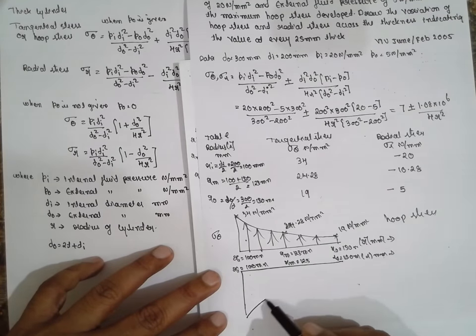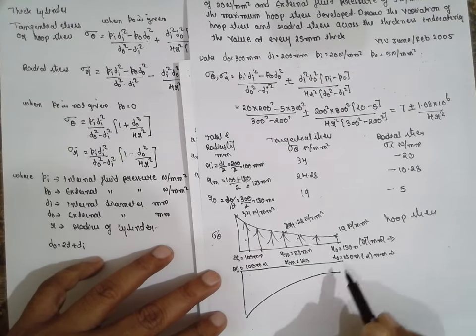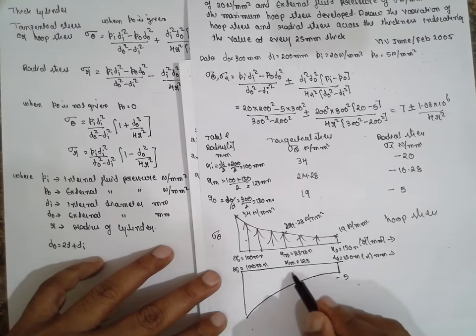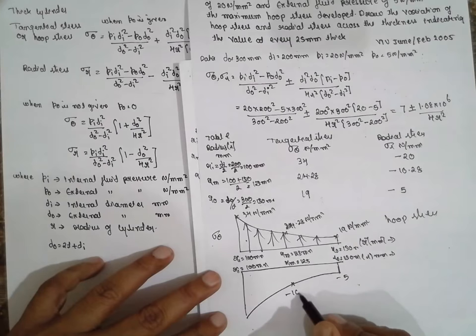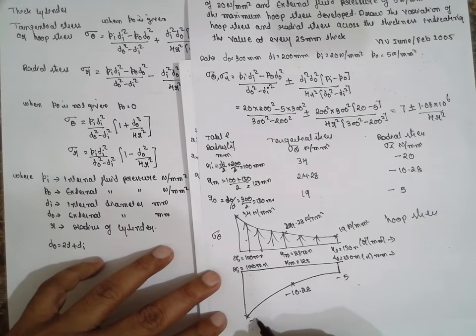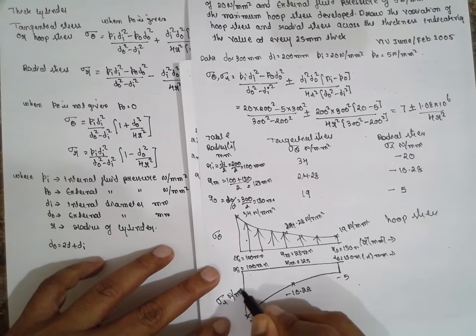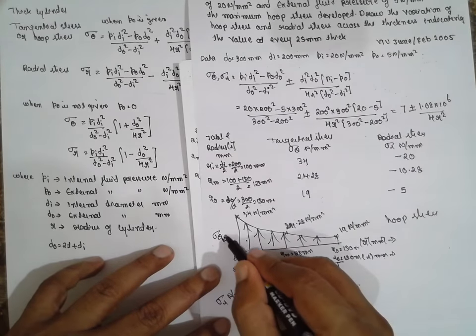The graph obtained will be in this way. It does not coincide here because there is a value. Minus 5, minus 10.28, minus 20. This is sigma r Newton per mm square. This is the stress distribution.